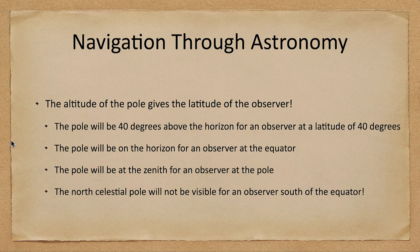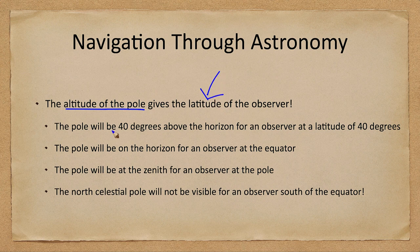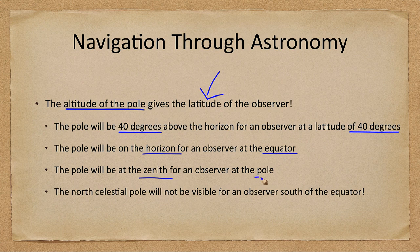Astronomy was used for navigation for a long time, because the altitude of the pole — how high it is above the horizon — tells you your latitude. For example, the pole will be 40 degrees above the horizon for an observer at a latitude of 40 degrees. It will be on the horizon for someone at the equator, and at the zenith for an observer at the pole. It will not be visible for an observer south of the equator, although they will have a south celestial pole — there just doesn't happen to be a bright star located near that.